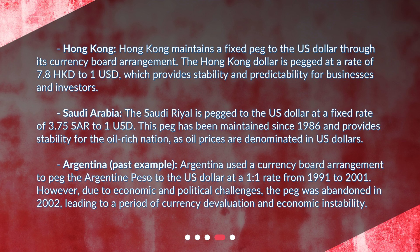The Saudi riyal is pegged to the US dollar at a fixed rate of 3.75 Saudi riyals to 1 United States dollar. This peg has been maintained since 1986 and provides stability for the oil-rich nation, as oil prices are denominated in US dollars.